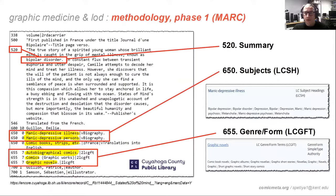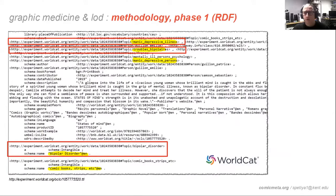Beginning with a review of existing metadata, a typical public library MARC record shows bipolar disorder in the summary and subject headings for manic depressive illness, plus terms for comics and graphic novels — we would find this work in a search for comics about bipolar disorder. However, references to medical subject headings and descriptions of the narrative content — including specific symptoms, treatments, and side effects — are missing. Similarly, an RDF record from WorldCat shows headings for manic depressive illness and bipolar disorder, and comic books in both English and French, but again lacks references to healthcare vocabulary and content descriptions.